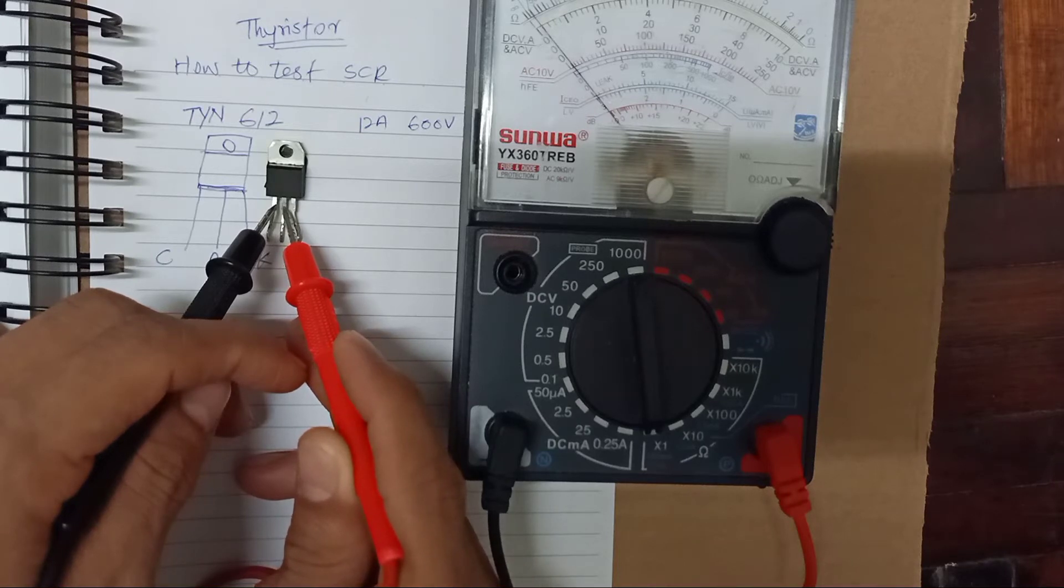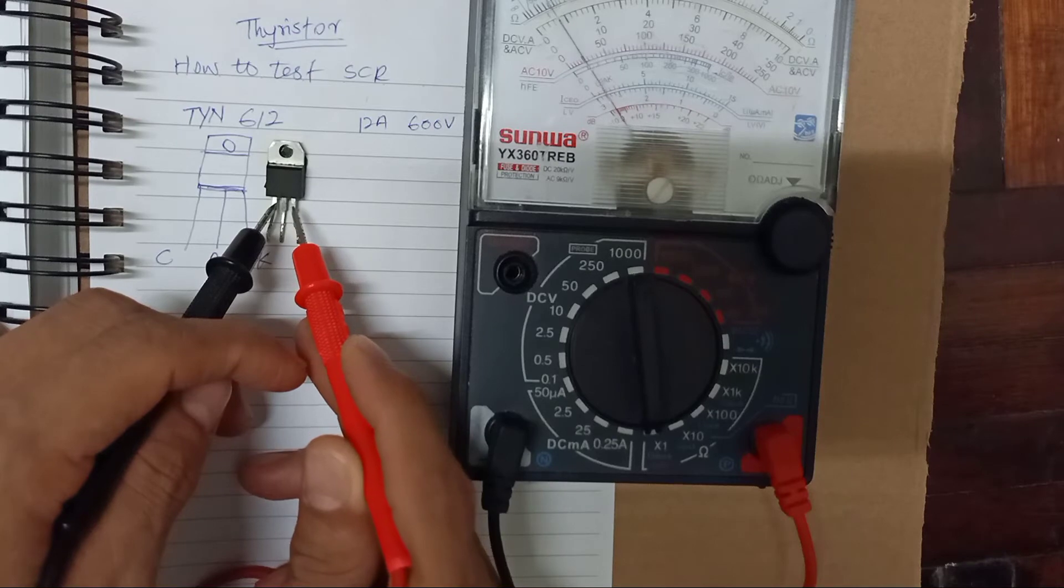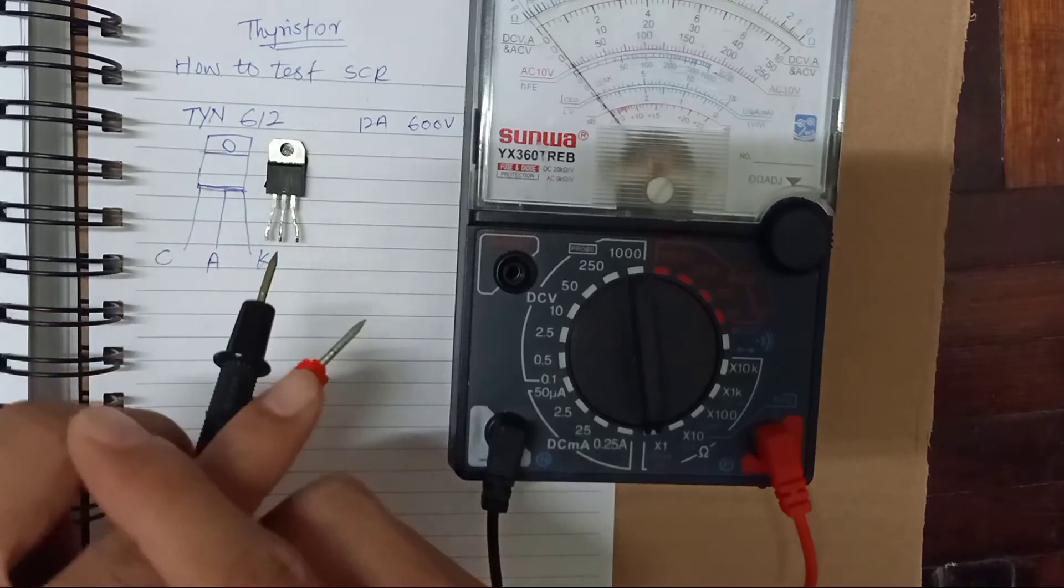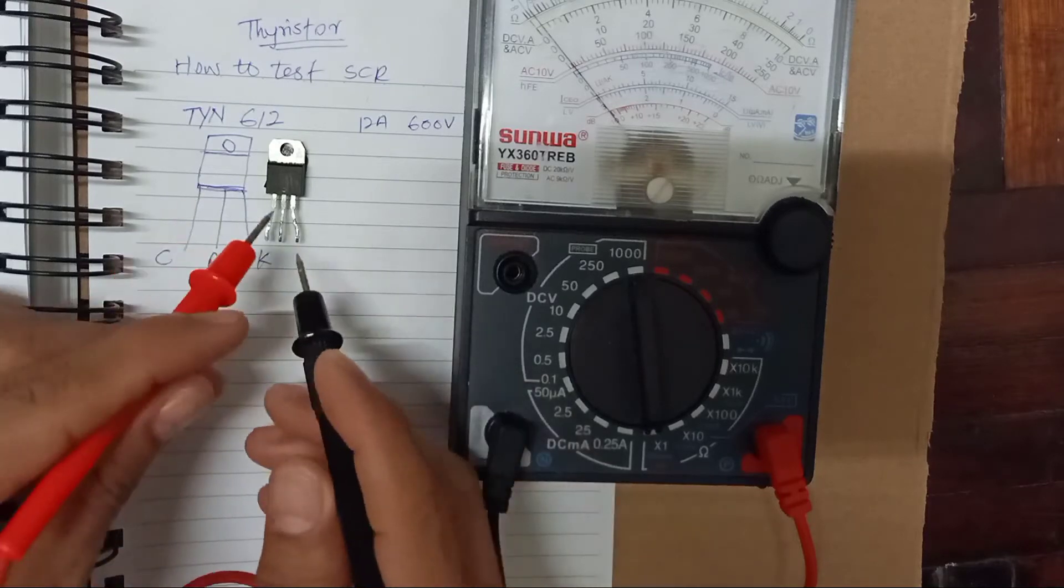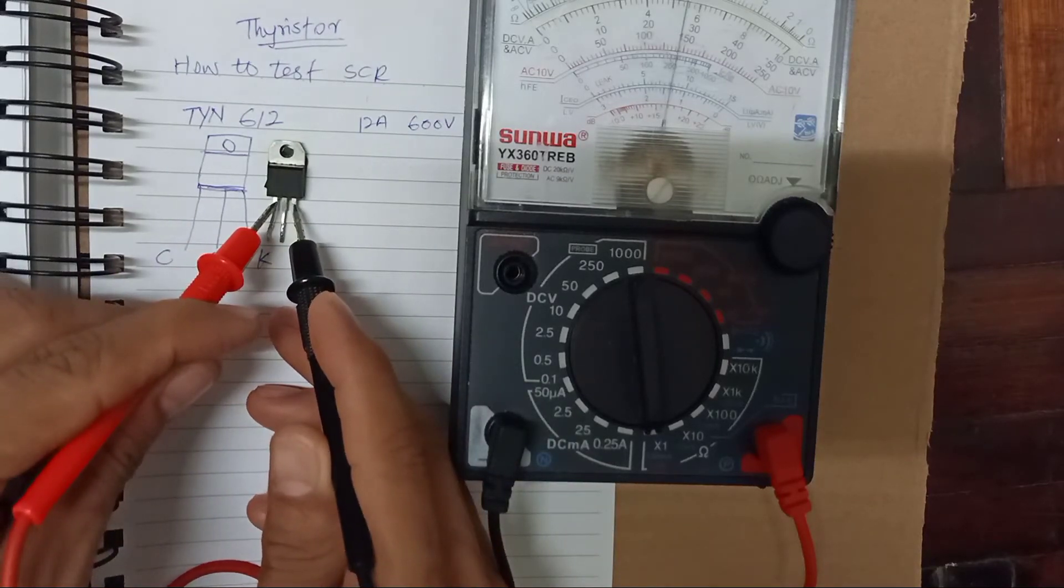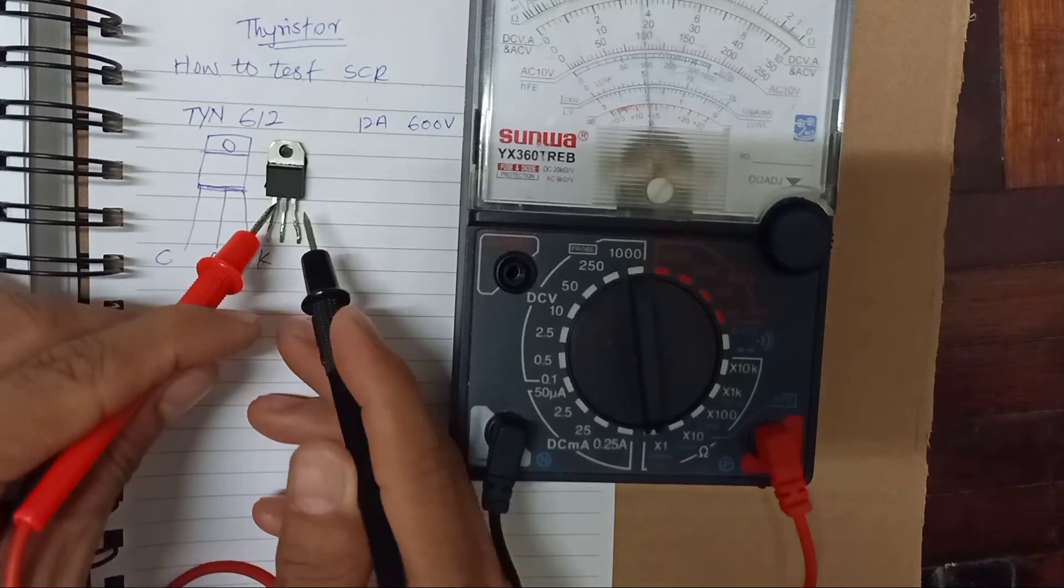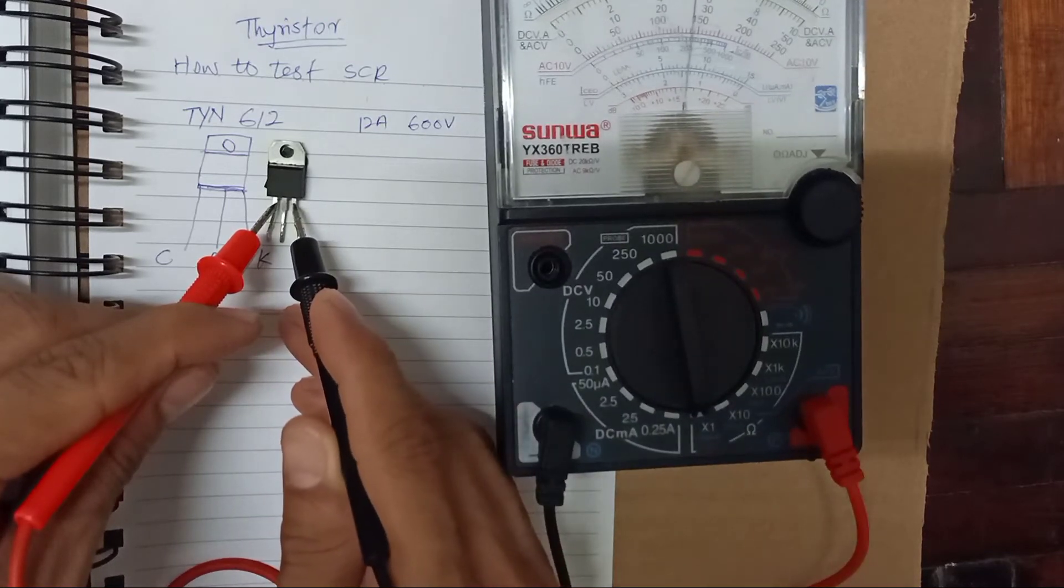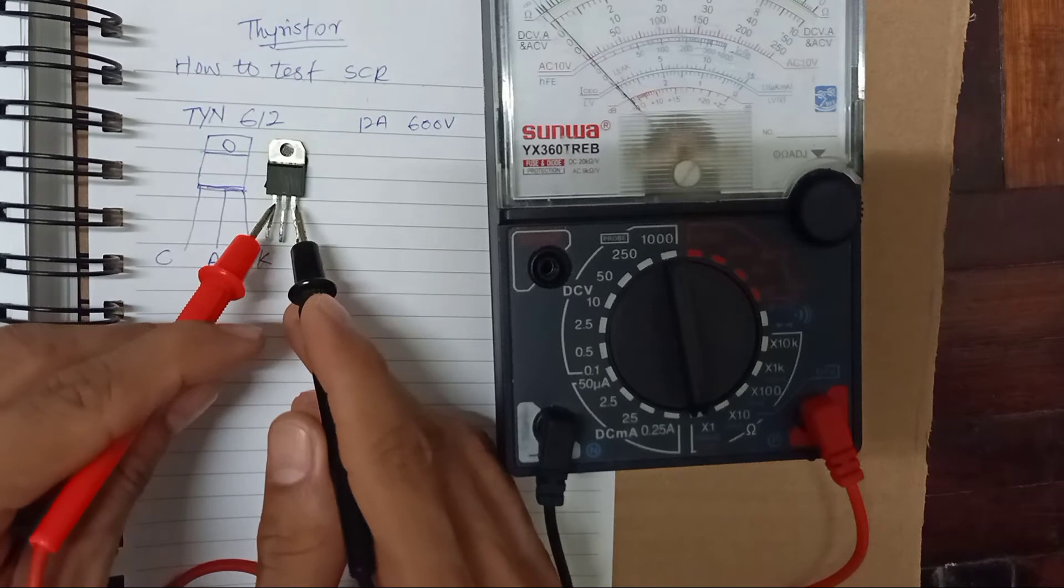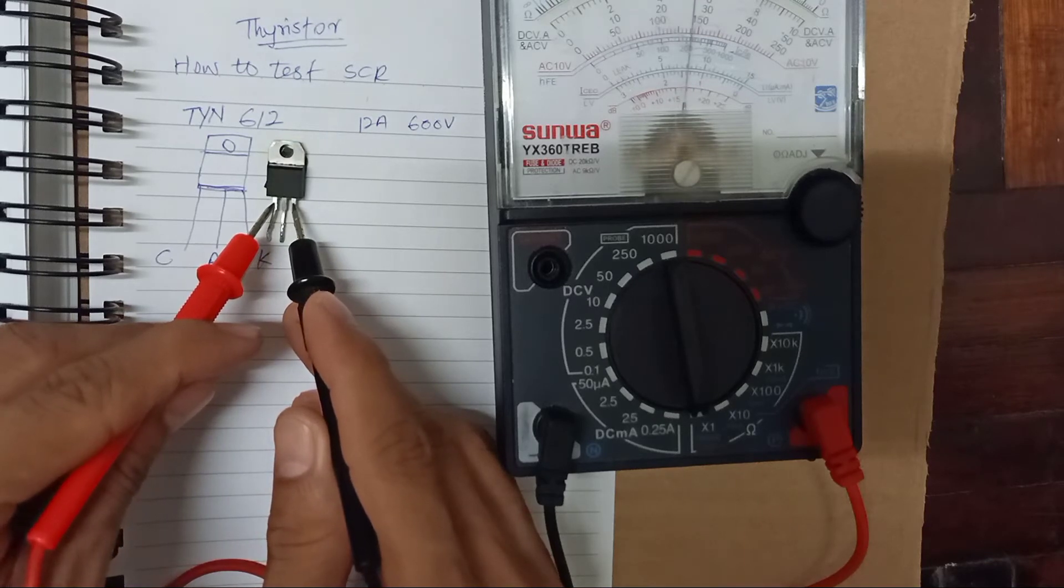Okay, there is connectivity. So the first and the last, there is connectivity. If you twist the multimeter probe here. Okay, so this is the correct way. It's supposed to be a short circuit.